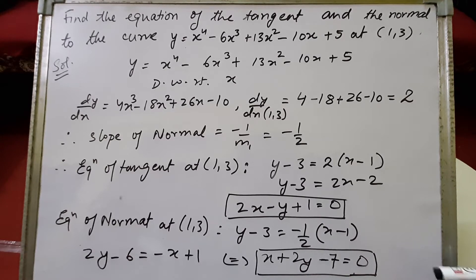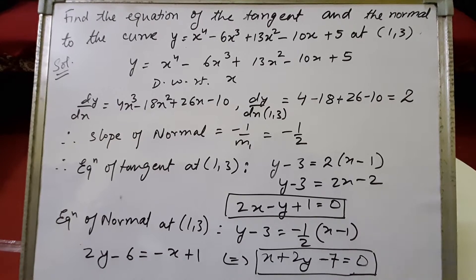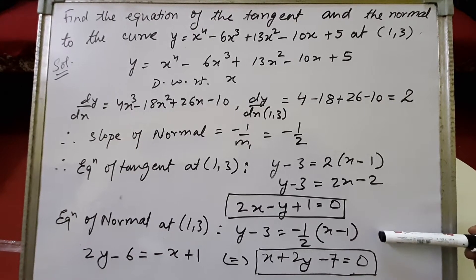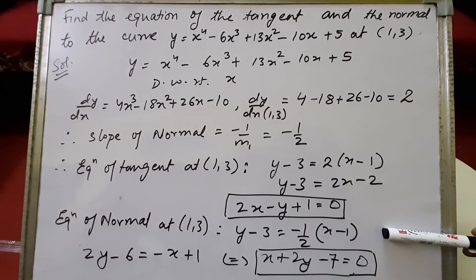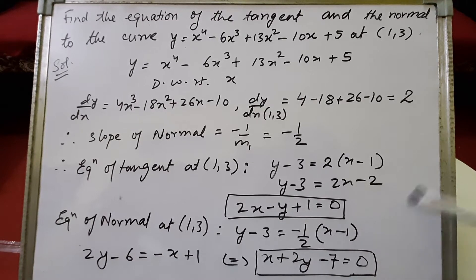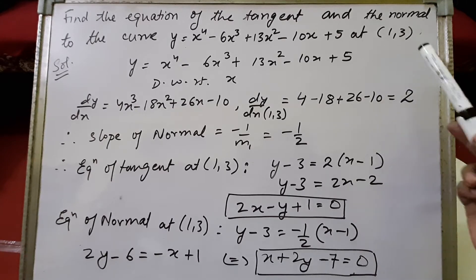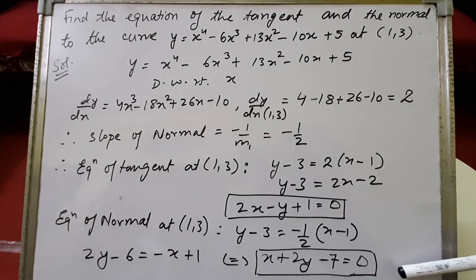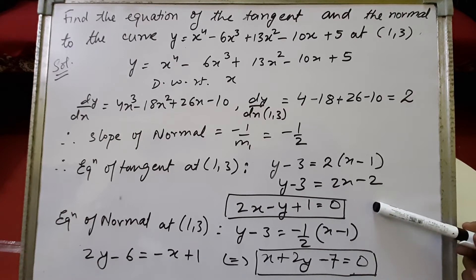Now let's calculate the equation of the normal at point (1, 3). The equation of the line at the given point is y minus y1 equals m2 times of x minus x1, where m2 is the slope of the normal and we have already calculated its value. With x1 equals 1 and y1 equals 3, when we substitute the values, the equation formed is x plus 2y minus 7 equals 0. This is the required equation of the normal, and 2x minus y plus 1 equals 0 is the required equation of the tangent.